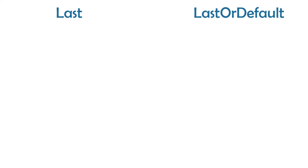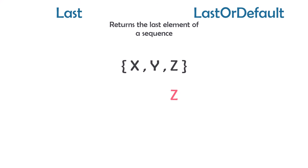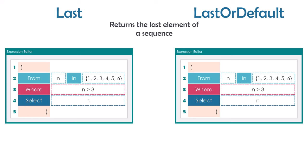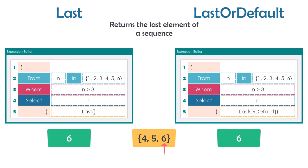As the name suggests, both operators return the last element from a sequence. I have a simple query to get numbers greater than three. The output of this query is a collection containing three numbers. If I want to get only the last number, I can use either operator with empty brackets. The result of both queries is the same — the last number in the sequence. Until this point there is no difference between both operators.